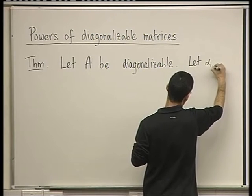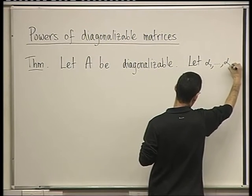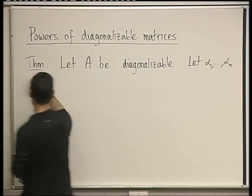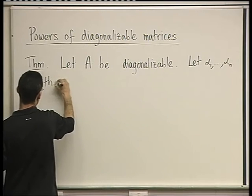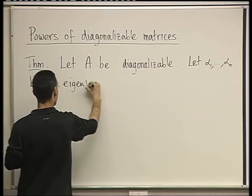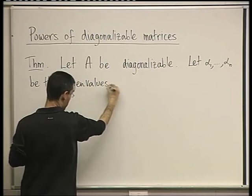Let α₁, ..., αₙ be the eigenvalues. Maybe some are the same, maybe there are multiplicities here.